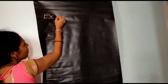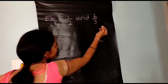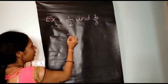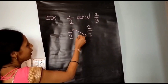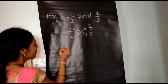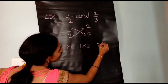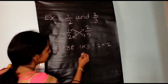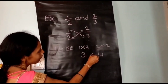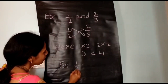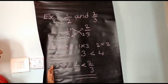Compare 1/2 and 2/3, which are two unlike fractions. We compare these two using the cross multiplication method. Multiply 1 into 3 and 2 into 2. 1 into 3 is 3, and 2 into 2 is 4. Since 3 is less than 4, 1/2 is less than 2/3. This is the comparison of unlike fractions using the cross multiplication method.